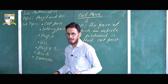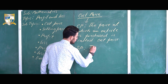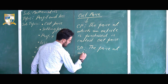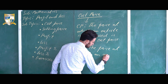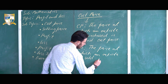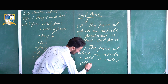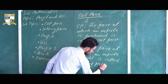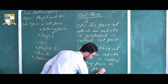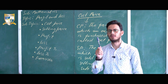Selling price, or SP in short, is the price at which an article is sold — also called the sale price. The price at which this pen is sold is called the selling price.